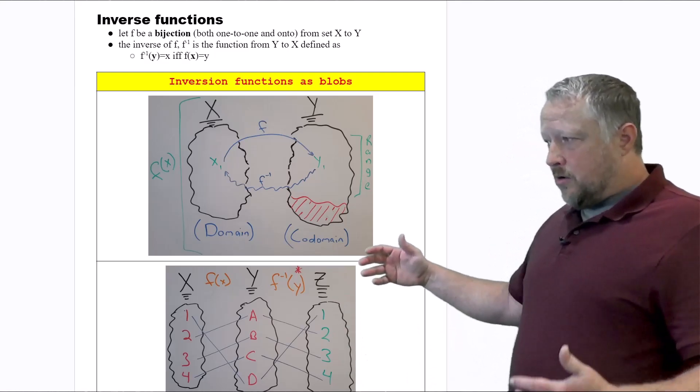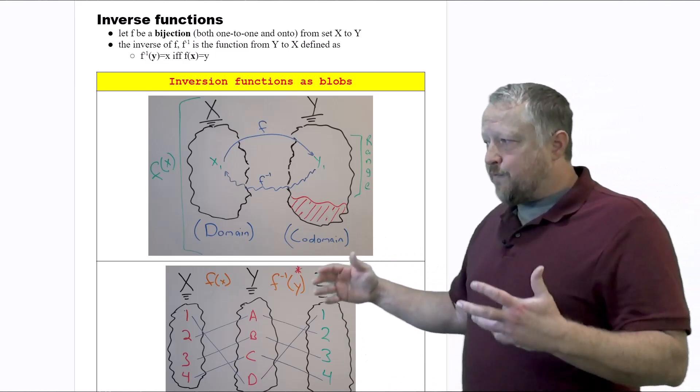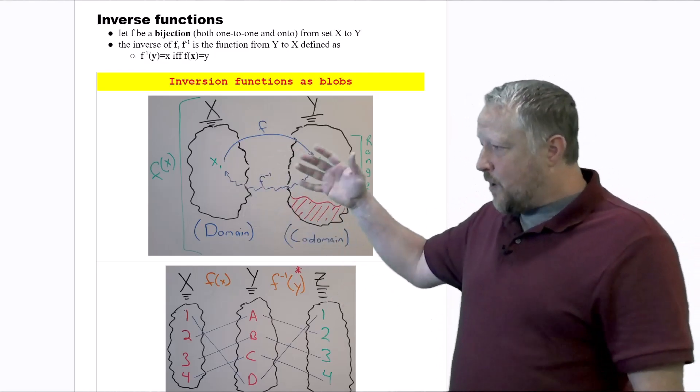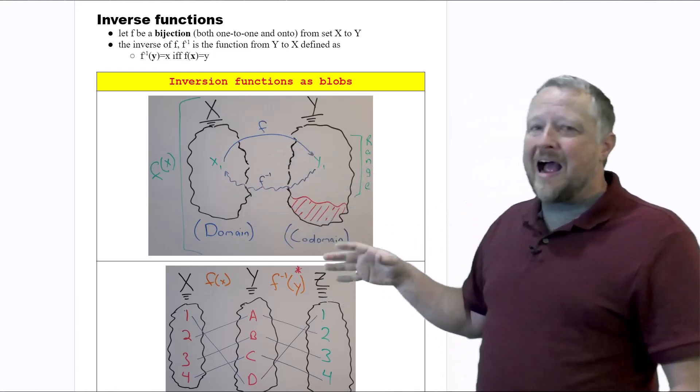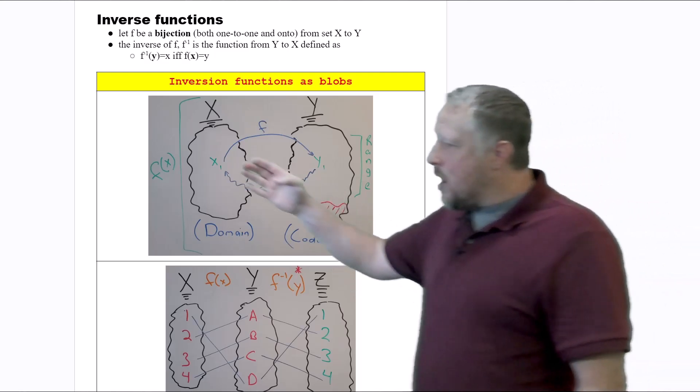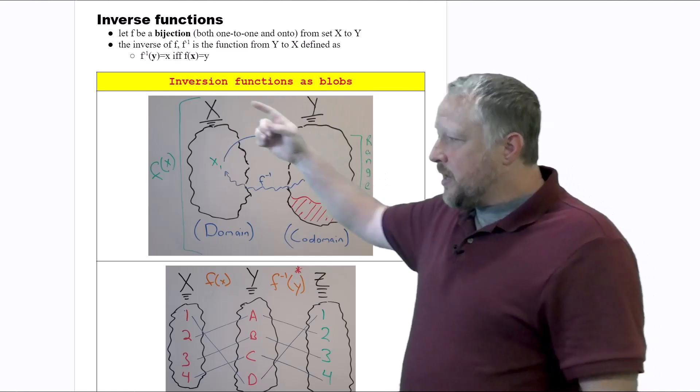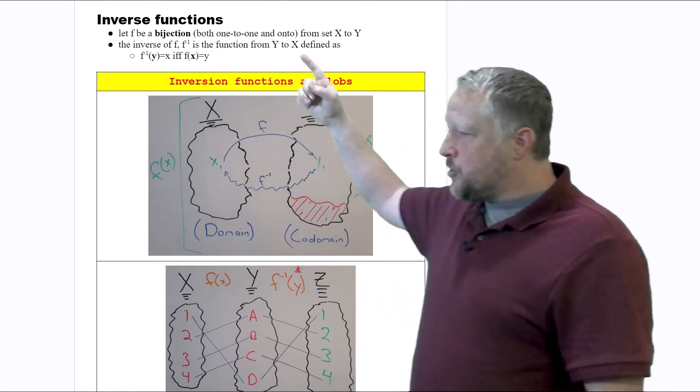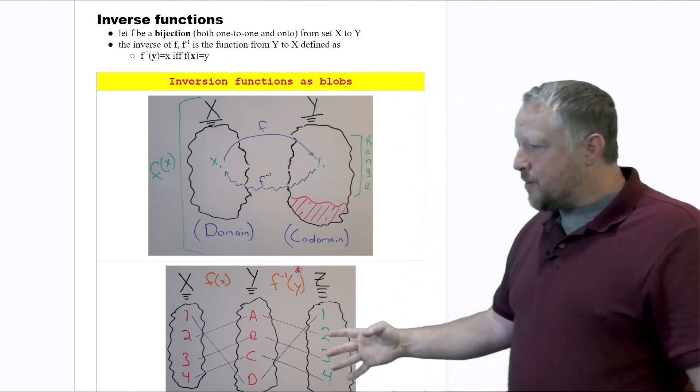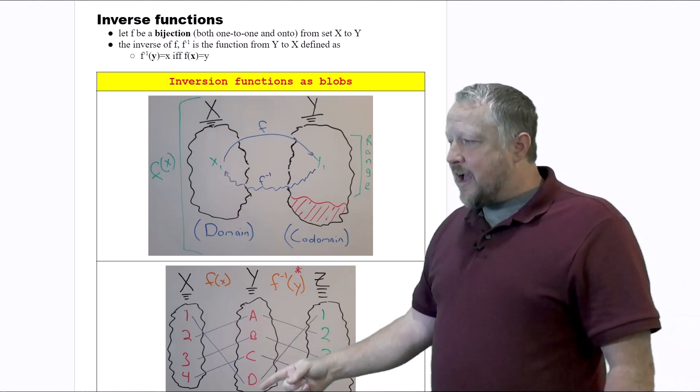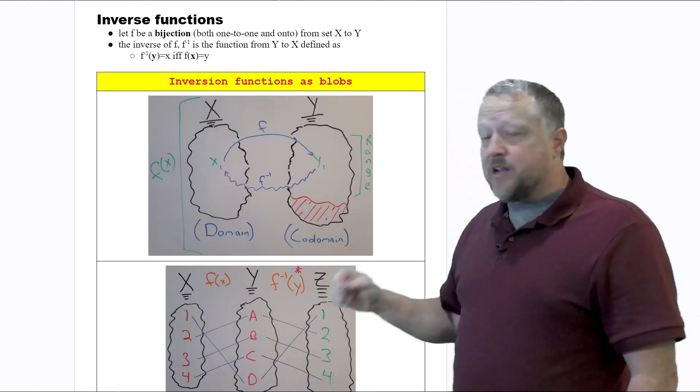Now the interesting part is using the inverse function from x to y is to find that you have one path back and forth. So that's why it has to be a bijection function, both one-to-one and onto, because we want to have, number one, every one of those values in the codomain being used.